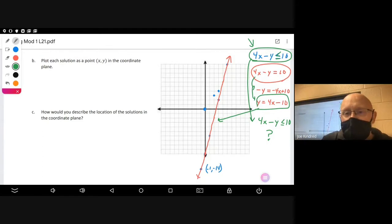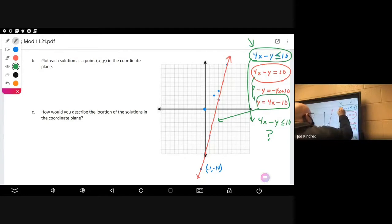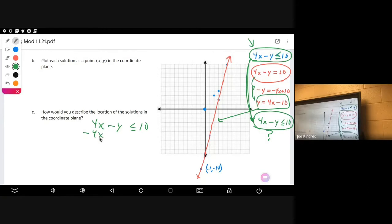The reason why I did that is because in Lesson 20 the solutions, all the points, were on that line. But you'll notice that in this lesson it could be points other than any of those that are actually on the line. Let's talk about why that is. Let's solve this particular problem. 4x minus y is less than or equal to 10. We've done this before. We subtract 4x on both sides similar to an equation.